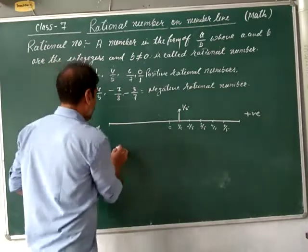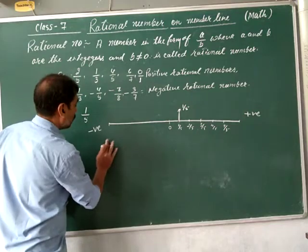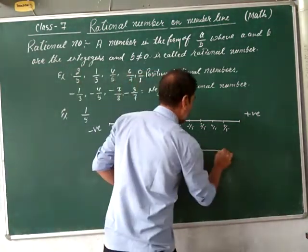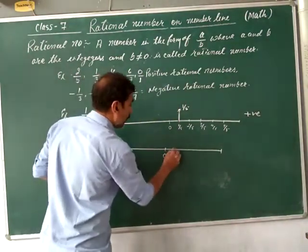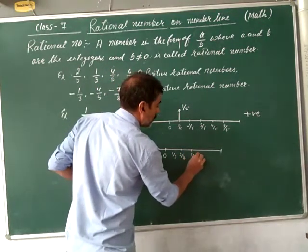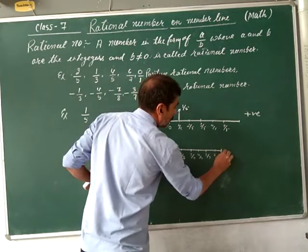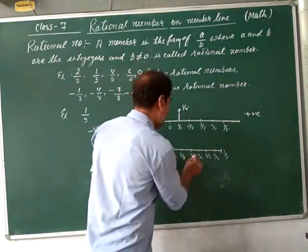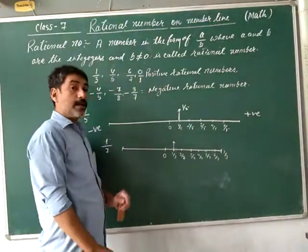Similarly, to represent 1 by 7 on the number line, divide the unit into 7 equal parts: 1 by 7, 2 by 7, 3 by 7, 4 by 7, 5 by 7, 6 by 7, and 7 by 7. This point represents 1 by 7 on the number line.